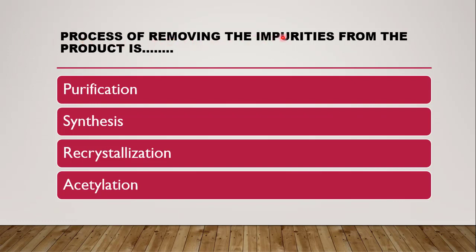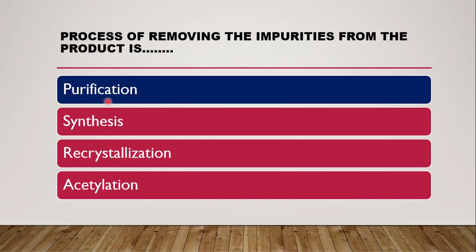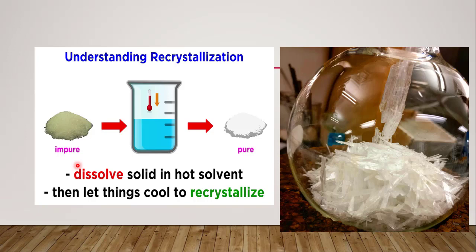First question: the process of removing the impurities from the product is — whether it is purification, synthesis, recrystallization, or acetylation. The correct answer is purification. Removing the impurity and purifying the product is purification. Recrystallization is also a correct answer but it is only one method of purification; it is not a 100% complete answer because there are many other methods of purification as well.